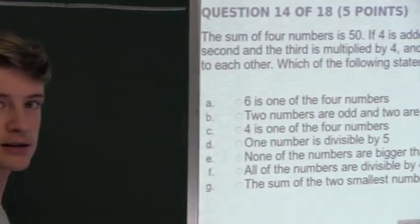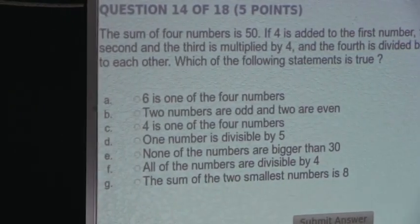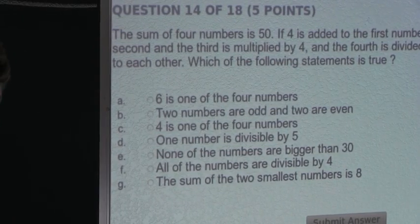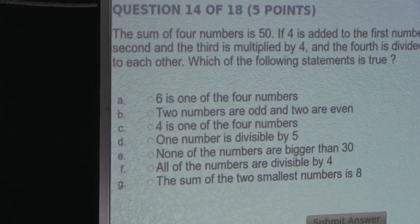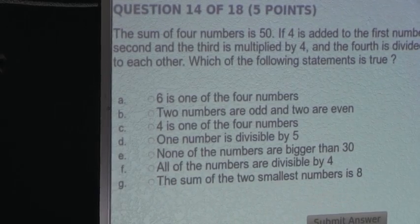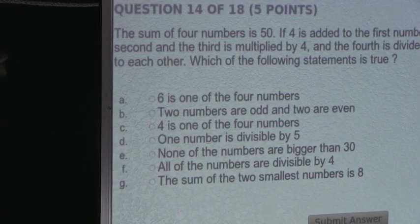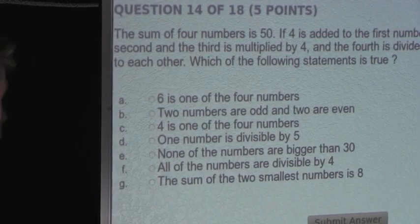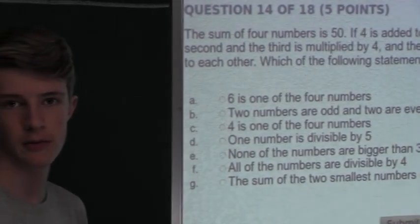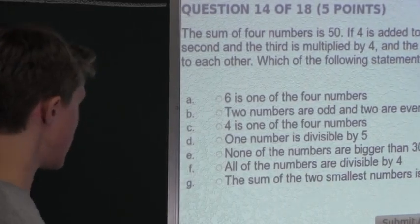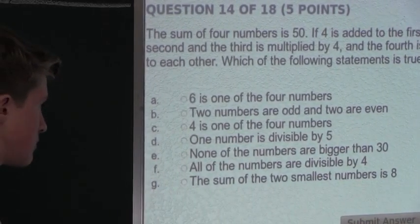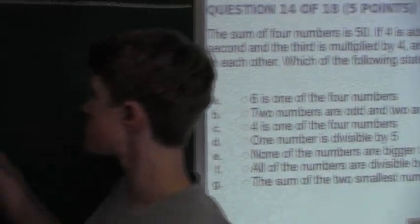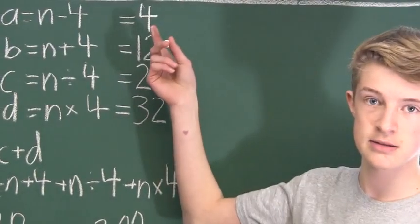Now, D says one number is divisible by five. This is false. Then E says none of the numbers are bigger than thirty. This is also false because we have thirty-two as one of the four numbers. Then F says all of the numbers are divisible by four. Well, this is false because two is not divisible by four. And G says the sum of the two smallest numbers is eight. This is false because two plus four is six, not eight.